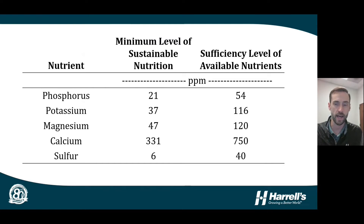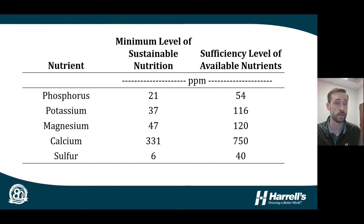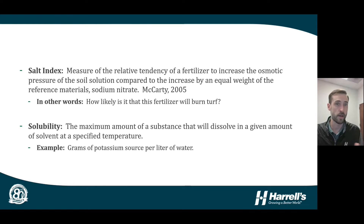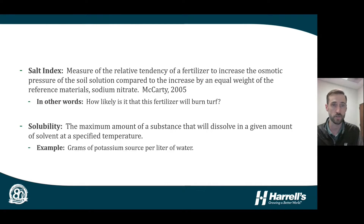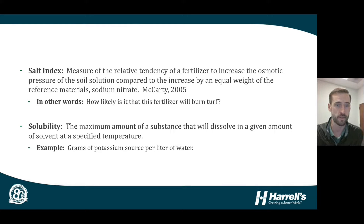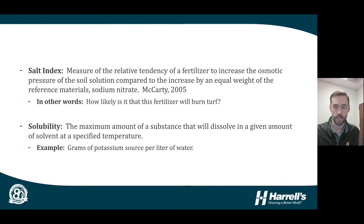When looking at how much potassium is needed and what form to apply, we can examine all options to see which fits best for your agronomic program. Two key definitions will come up repeatedly. Salt index is the measure of the relative tendency of a fertilizer to increase osmotic pressure of the soil solution compared to sodium nitrate — in simpler terms, it's the relative measure of how likely a fertilizer source is to burn turf. Solubility is the amount of a substance that can dissolve in a given amount of solvent at a specified temperature — for example, grams of a potassium source per liter of water.